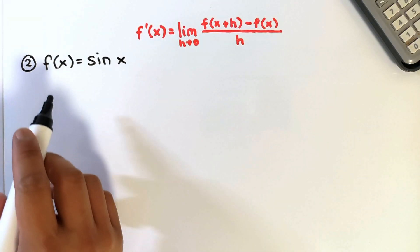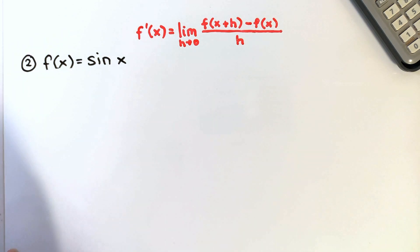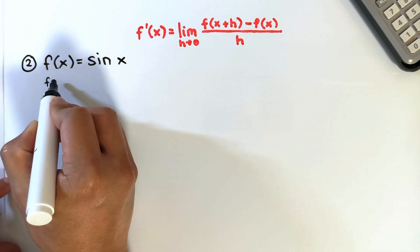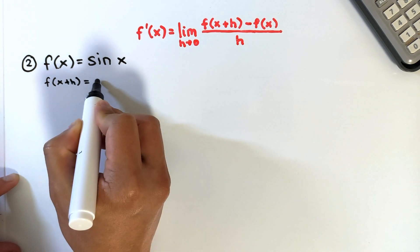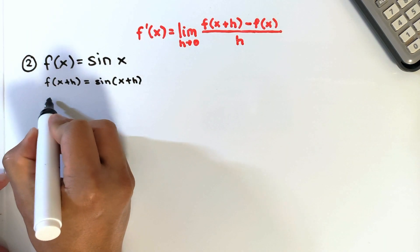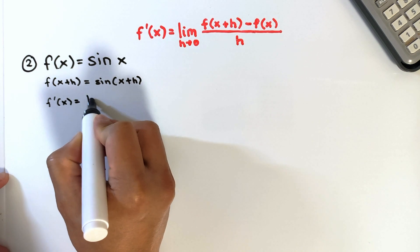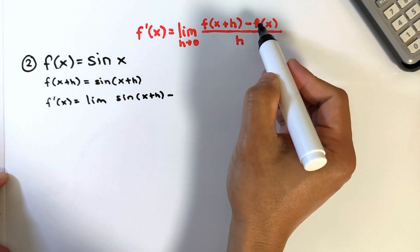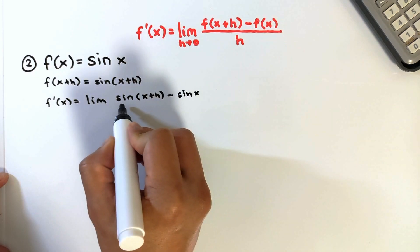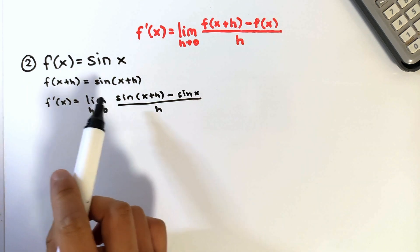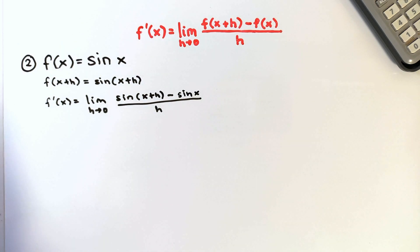For the second example, we consider f of x equals sin x. Our objective is to find the derivative using the same formula. The first step is to find f of x plus h, which equals sin of x plus h. Plugging in, f prime of x equals the limit of sin of x plus h minus sin x over h as h approaches 0. If we evaluate this limit now, we get the indeterminate form 0 over 0, so we need to simplify first.